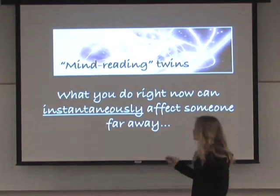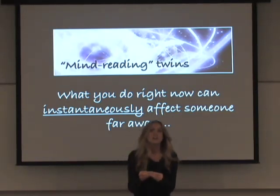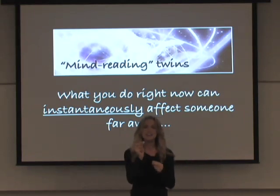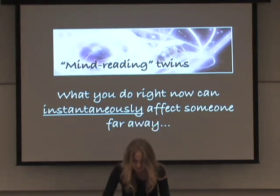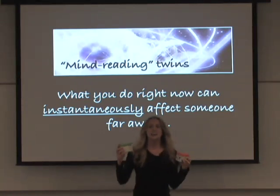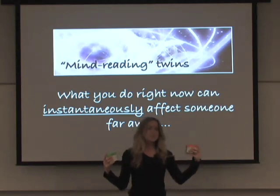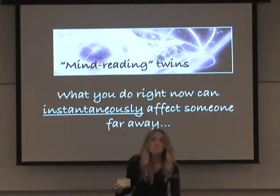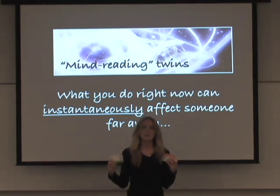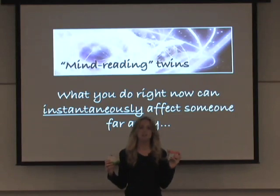We can also create particles that can somehow read each other's minds, so that when one particle does something, it instantaneously affects the other particle. For example, say I have two quarters created out of the exact same material, and when I touch them together they somehow share some information. I put them in two separate boxes. I have a 50-50 chance of seeing heads or tails — I never know what I'm going to get. But if I shake them both up and open one box and see heads, I know immediately that the other box has tails, without even looking at it. Even though these are two separate boxes with seemingly independent probabilities, what happens in one box instantaneously affects the other.